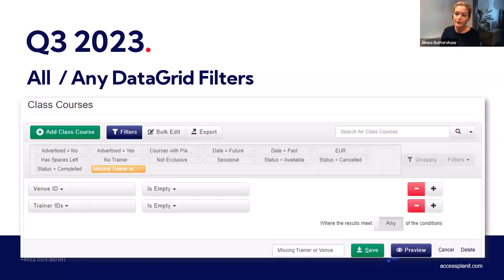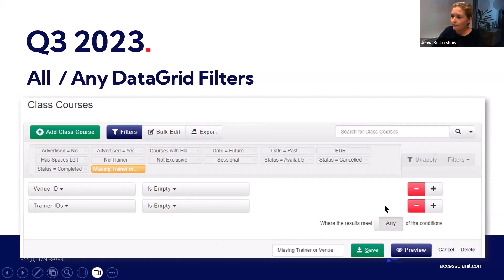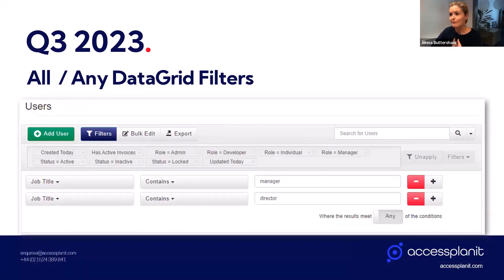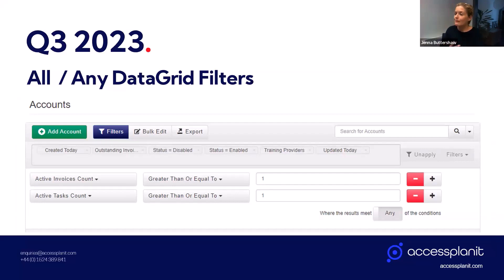For example, you'd be able to build a filter on your courses data grid which shows you all the courses that are either missing a venue or missing a trainer — so you know which of those courses still need either of those things arranging. Without the 'any' option, this filter would only show you courses that are missing both a venue and a trainer. As another example, you'll be able to build a filter showing all users with a job title that contains either 'manager' or 'director', which could be useful to build up some nice mailing lists. You could also filter accounts that either have an active invoice or an active task related to them.